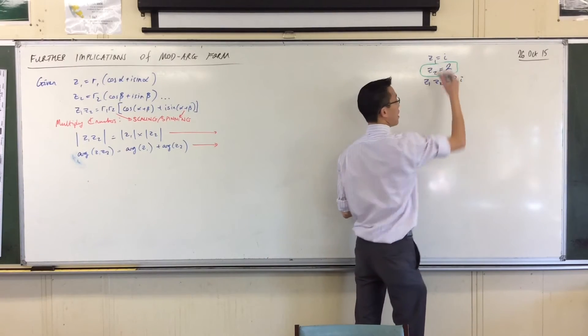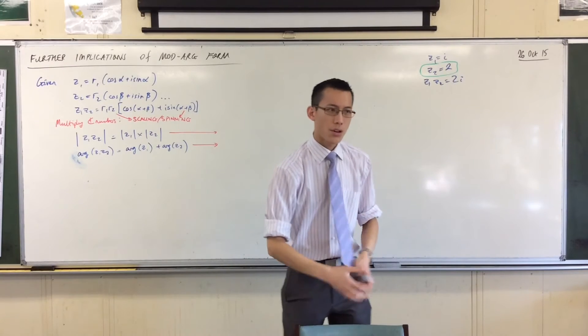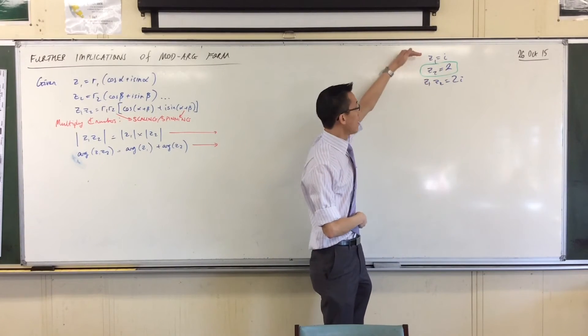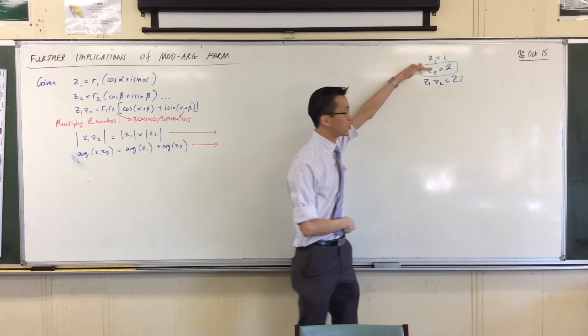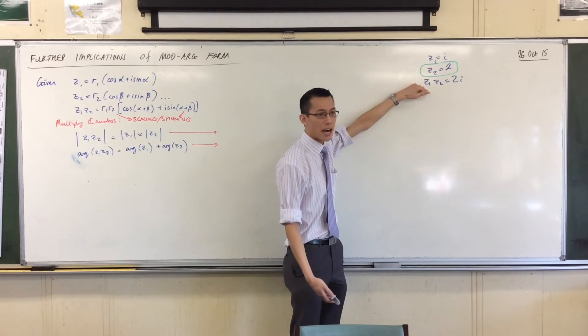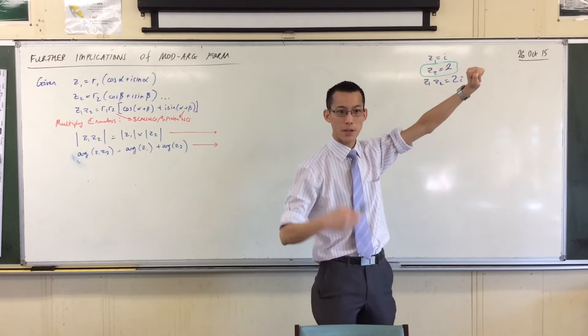Let's have a look at this one. You remember I multiplied by two. So what happened to the argument in this case from the original number to the product? And the answer is the argument didn't change. Why didn't the argument change? It's because the argument I was adding was zero.